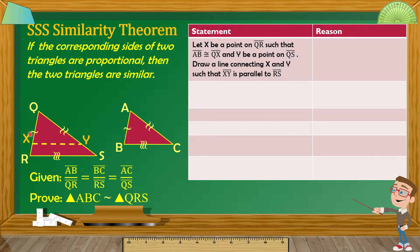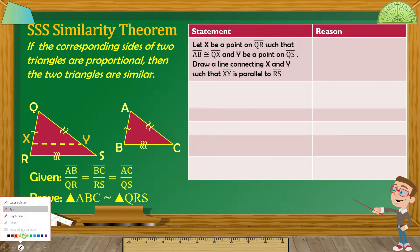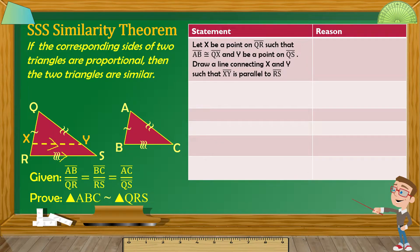Itong X na ito ay yung point sa QR, at si Y naman ay point sya sa side QS. Co-connect natin yung point X at point Y — magiging line yan, meron tayong line XY, which is kailangan parallel sya dito sa RS. Itong segment na nabuo dito, itong QX, assume natin na this is congruent dito sa side AB. Yung reason natin dyan is by construction.